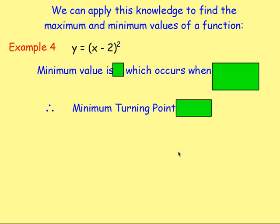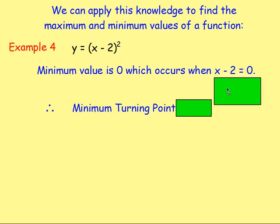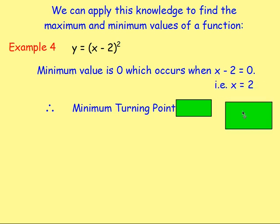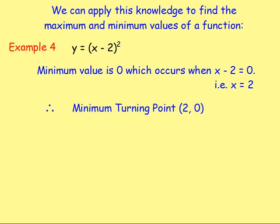Example four: y equals (x minus 2) all squared. I'm squaring something, so the smallest value of that is zero, and I'm not doing anything else after squaring it. So the minimum value is zero, and that occurs when the thing you're squaring equals zero. So x minus two must equal zero, meaning x would equal two. The minimum turning point is (2, 0).